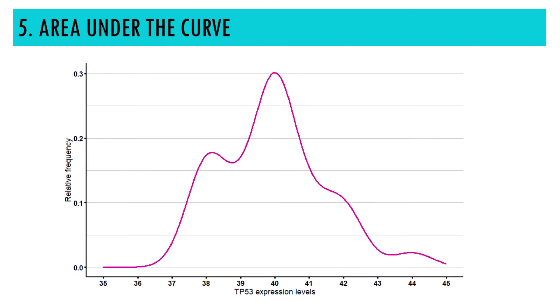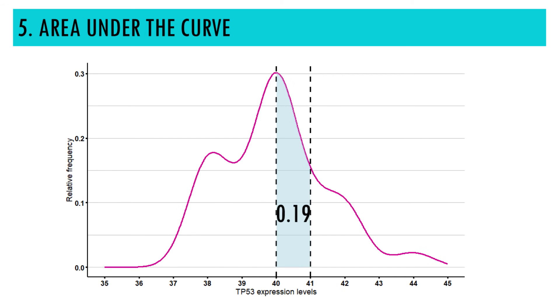For example, the probability of observing TP53 expression value lower than 41 is the area in pink, which is around 0.7 or 70%. The probability of observing a value between 40 and 41 is around 19%.